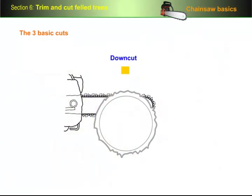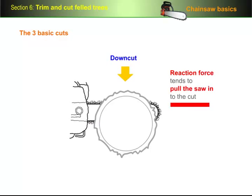The down cut uses the underside of the bar. Because the chain is coming back towards the saw on the underside, the reaction force it produces tends to pull the saw into the cut, away from your body.